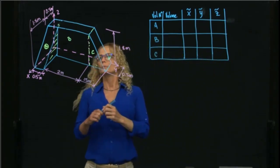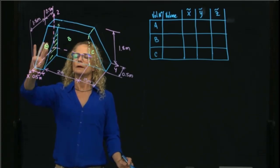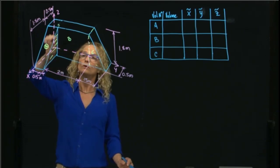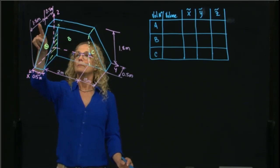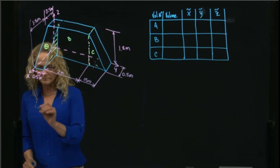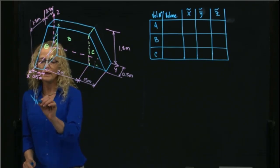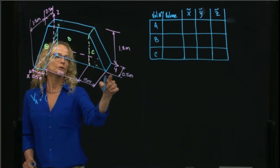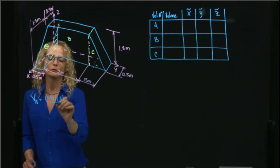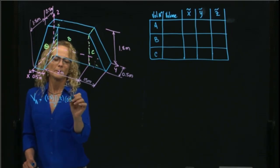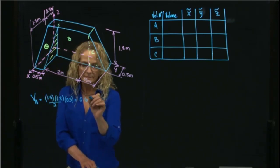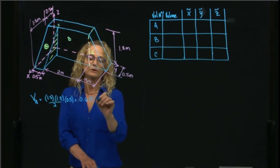Let's start with volume A, which is this triangle right here, which has a depth. The area of this side of the triangle is base times height, which is 1.5 times 1.8. So the volume of A is 1.5 times 1.8, divided by 2, times the depth. If you multiply all those numbers, you get that this volume is 0.675 meters cubed.